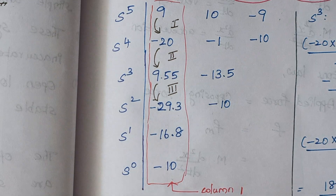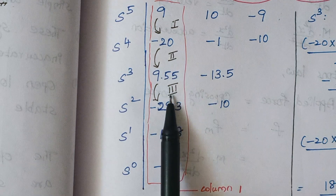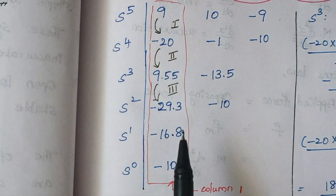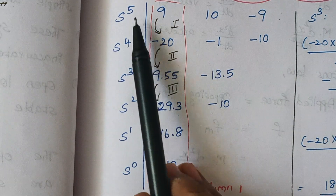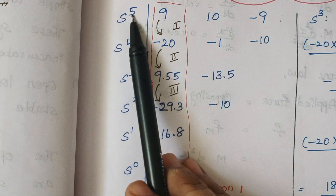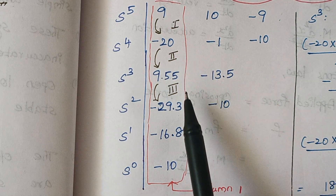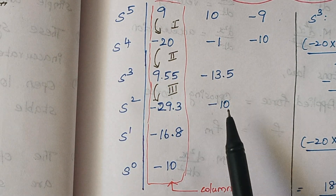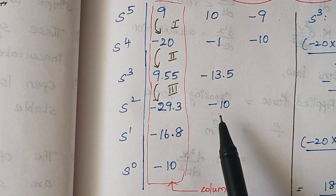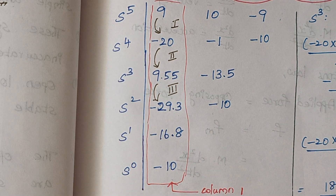To comment on the location of the roots: the maximum power is 5, so there are five roots total. Since there are three sign changes, three roots lie on the right-hand side of the S-plane, and the remaining two roots lie on the left-hand side of the S-plane. Hope you understand this problem. Thank you.